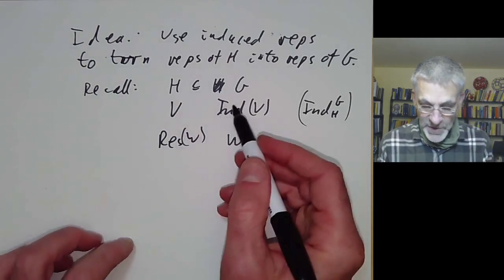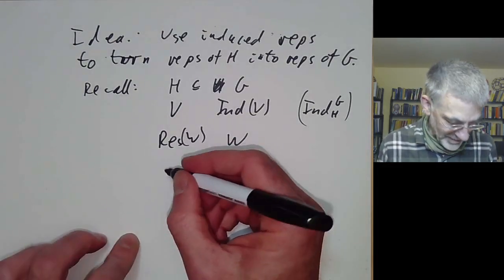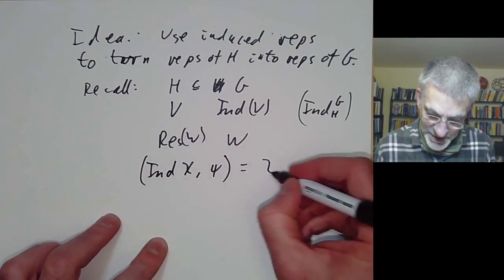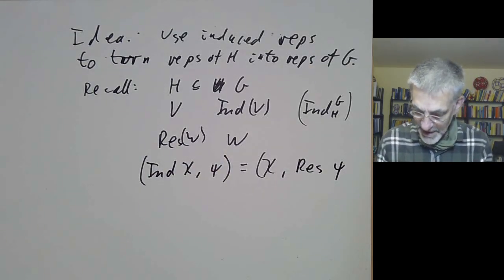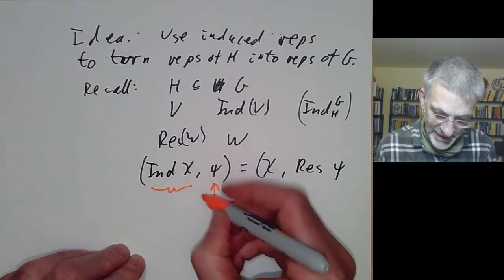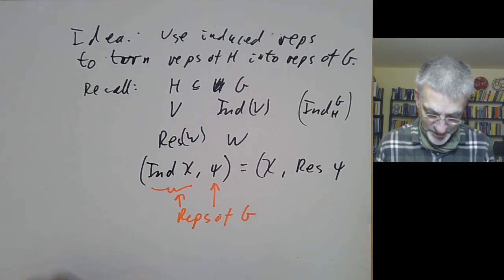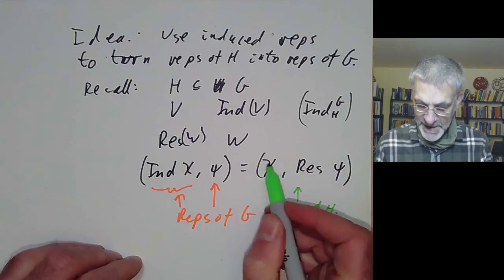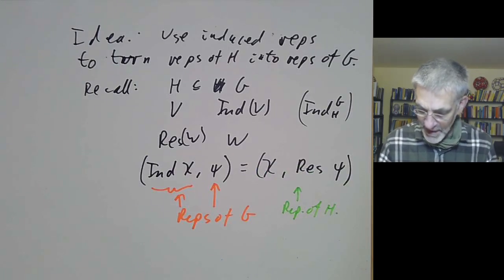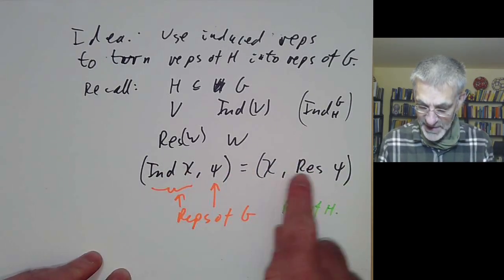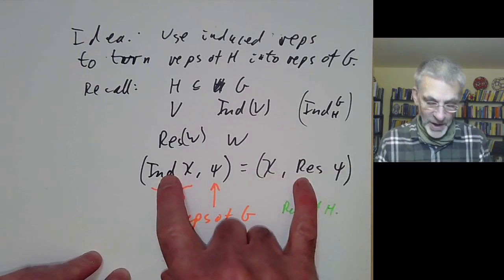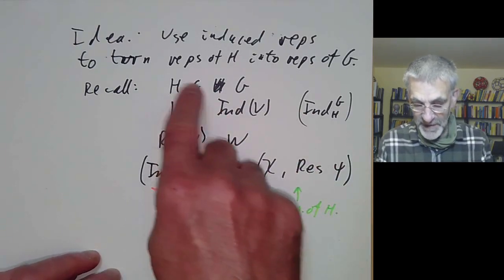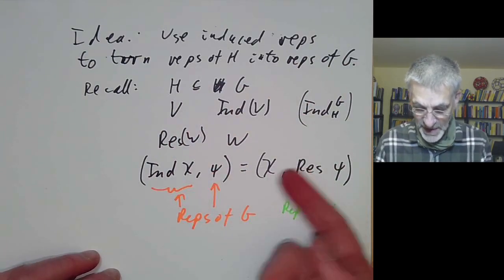Translating into the language of characters: if we have an induced character χ and take its inner product with a character ψ, this equals the inner product of χ with the restriction of ψ. Here ψ and the induced character of χ are representations of G, and these inner products are the usual inner product of characters. This adjunction of ind and restriction on characters looks just like adjoint linear operations on a vector space — one reason why the term 'adjoint functor' is used.